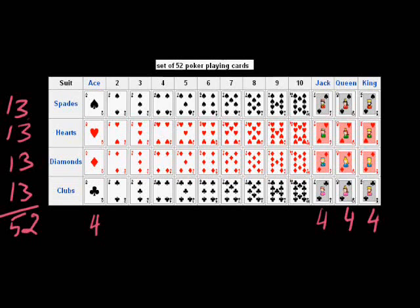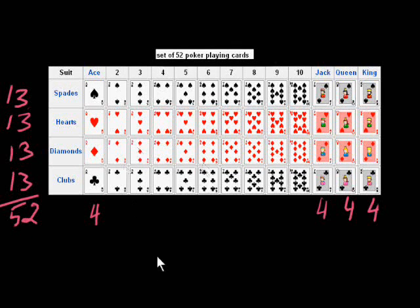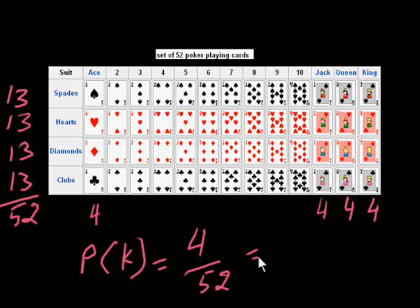So if we have to calculate the probability of king, the favorable number is 4: one in clubs, one in diamonds, one in hearts, one in spades. Total number of results is 52 cards. The chance of a king coming will be 4 divided by 52, which is about 7.6% chance.